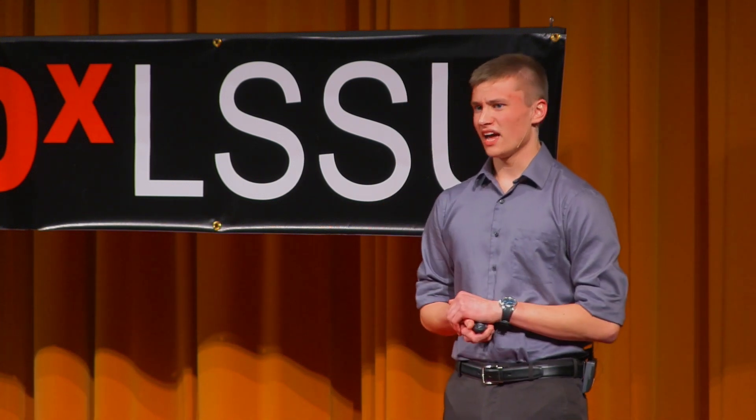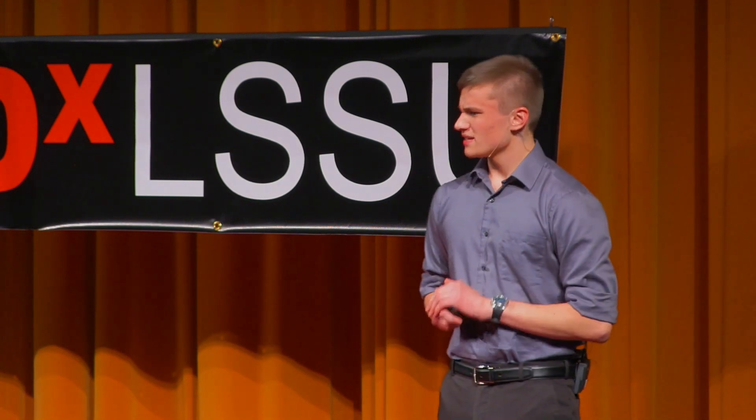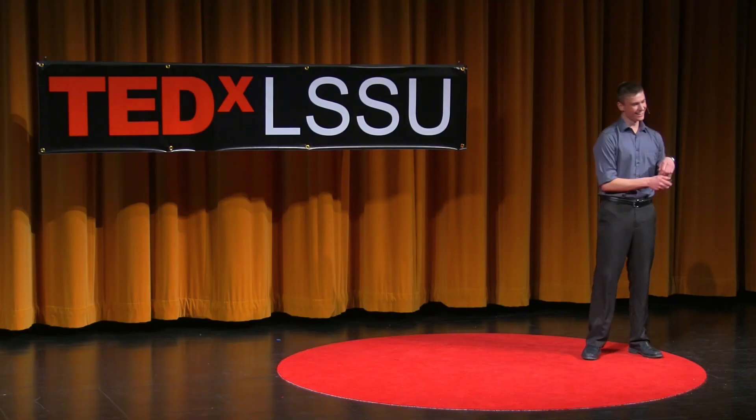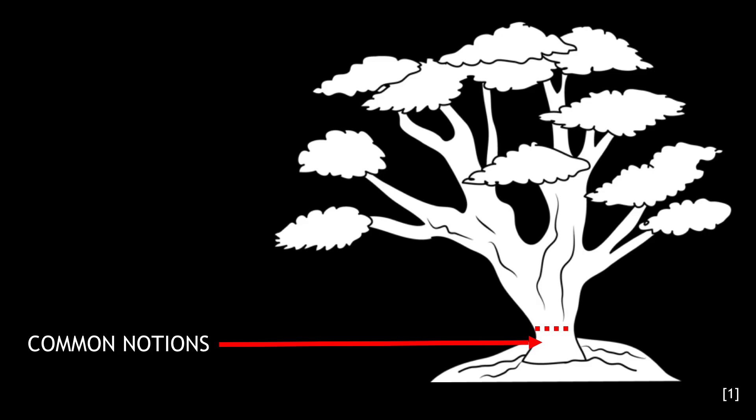This has to start somewhere, and Euclid started by identifying five common notions — statements like, two things that are equal to the same thing are equal to each other. I find it convenient to visualize the concept of deductive reasoning as a tree, and just for the sake of an incredible pun, we're going to call this our geometry. Euclid's five common notions are going to go squarely at the base of this tree.